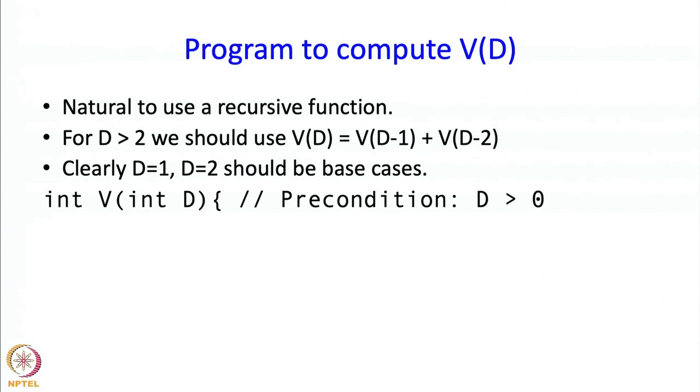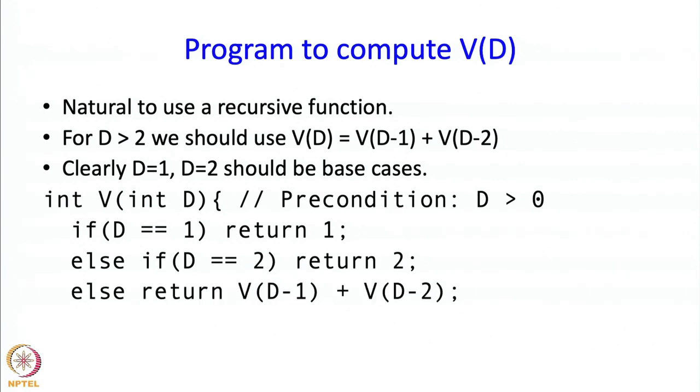This might be a natural program to write. V of d, which is what we want to calculate, where the precondition is that d is bigger than 0. If d is equal to 1 then we return 1. If d equals 2 then we return 2, else we use this relationship. That is it.